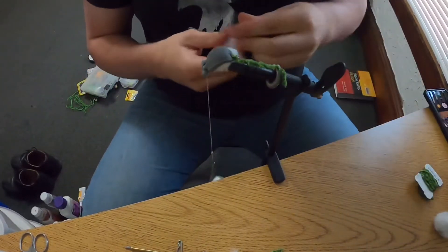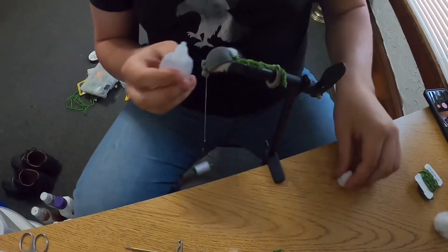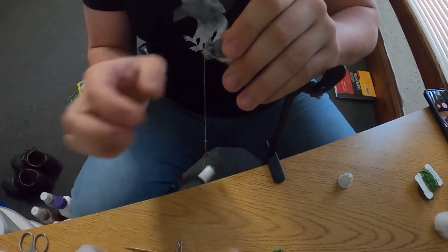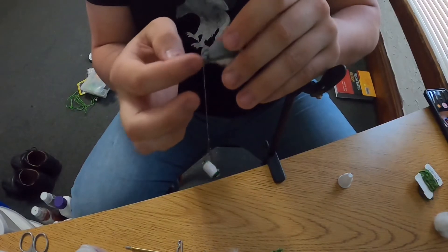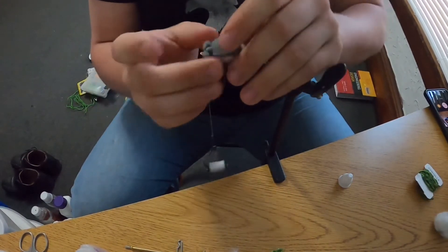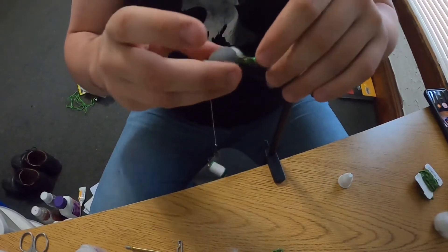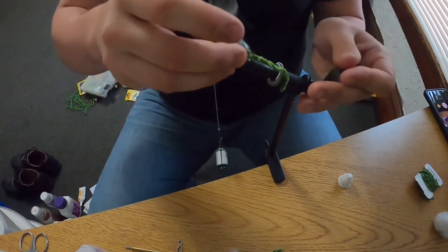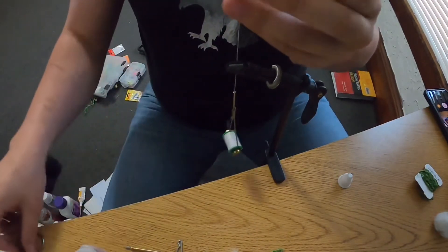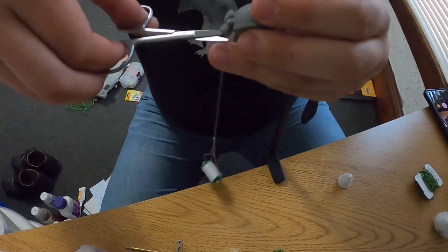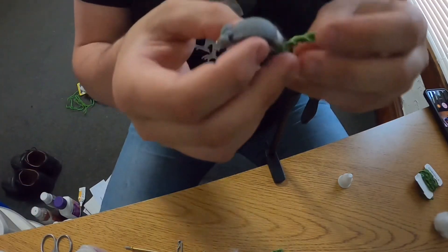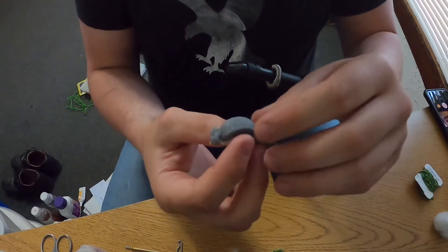Then you add a little bit of head cement right there on that tip, try and soak into that knot. Cut off the excess and there you go, there's your little mouse.